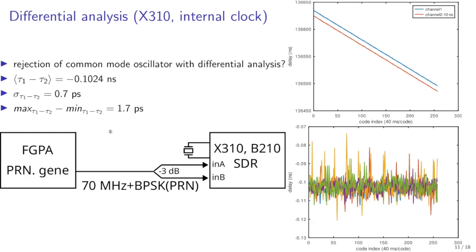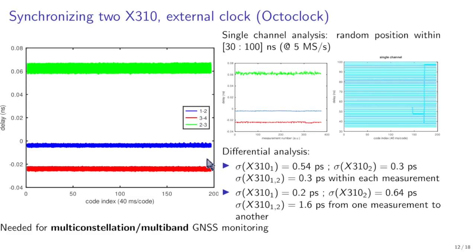So this is a story for one X310. Now what happens if we want to cascade X310s? So we want to have multiple X310s all of them receiving the same pseudorandom sequence and can we use one channel of one X310 with respect to another channel of another X310 considering that all X310s will have one channel fed by the pseudorandom sequence for synchronization.